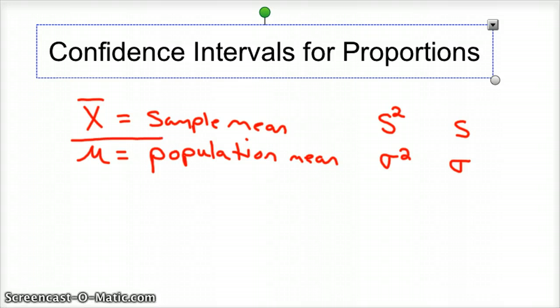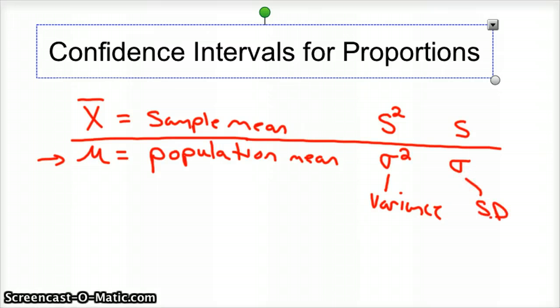So all of this is for sample, and these down here are the symbols we use for populations. So this is variance, and this is standard deviation. Okay, and same up here.